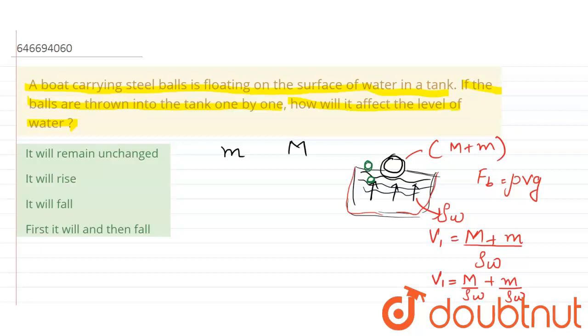Then the water displaced now will be equal to the density of the steel ball. So now what will be the volume V2? Let us consider V2 will be mass of single ball upon density of steel plus...